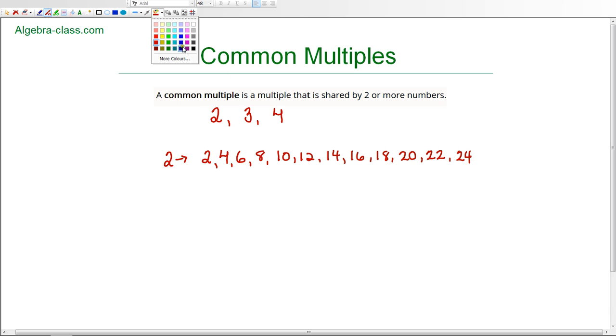Now we're going to do the same thing and find all the multiples of three. 3 times 1 is 3, 3 times 2 is 6, 3 times 3 is 9, and again you can see that I'm skip counting by 3. 3 times 5 is 15, 3 times 6 is 18, 3 times 7 is 21, and 3 times 8 is 24. So there are all the multiples of 3 up to 24.